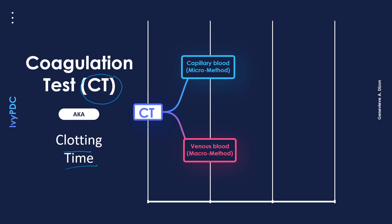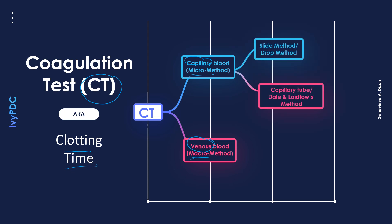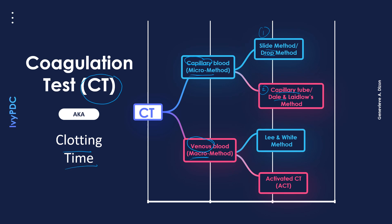Clotting time can be divided into two depending on the type of specimen used. If capillary blood is used, these methods are called micro methods. When venous blood is used, these are called macro methods. Each method has two types: for the micro method we have the slide method and the capillary tube or Dale and Laidlowe's method; for the venous blood method we have the Lee and White method and the activated coagulation time method.